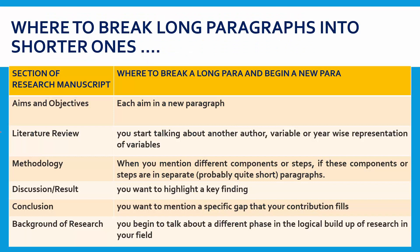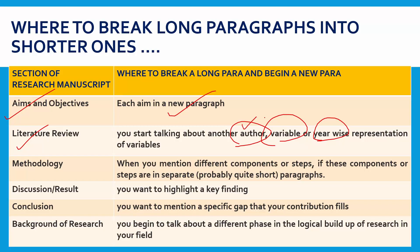The next question is how to break long paragraphs into shorter ones. While writing research manuscripts, we tend to write in a flow and that creates long paragraphs. In the aims and objectives section, if your research manuscript has more than one aim, then every aim should be discussed in a new paragraph. In the literature review section, we normally sort out and highlight previous research according to authors, variable-wise study, or year-wise study. In any case, a new paragraph should be started to highlight the work of a new author, a different variable, or a different year.